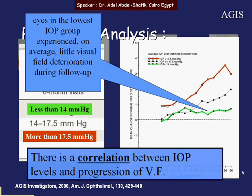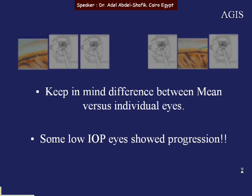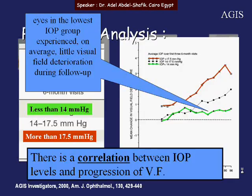There is a correlation between initial IOP levels and progression of the visual field. However, we must keep in mind the difference between mean and individual eyes. This study shows that some individual cases with low IOP still showed progression, but on a mean level, the group overall looked stable.